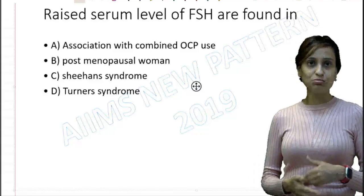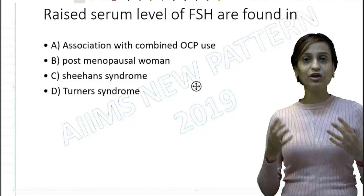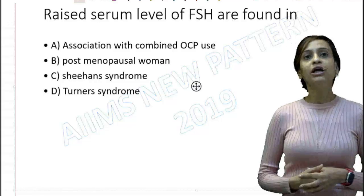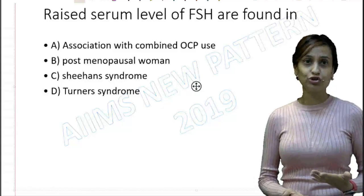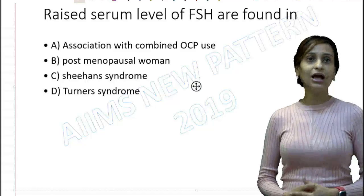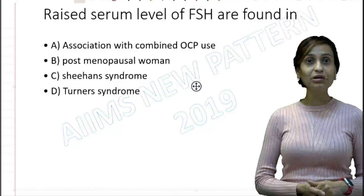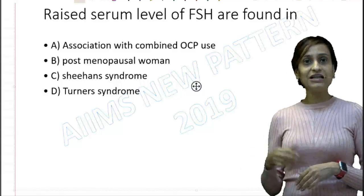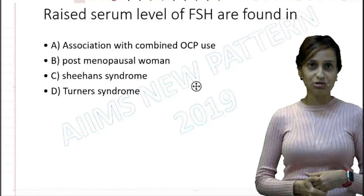Option B says postmenopausal woman. In postmenopausal women, because the ovary is failing to function, it is not going to provide the feedback inhibition it is normally supposed to. So the FSH levels are going to be higher — FSH is high in postmenopausal women because of absence of feedback inhibition. Whereas with OCPs the levels are low because of feedback inhibition.